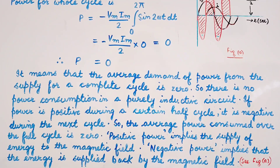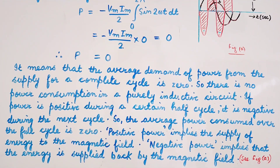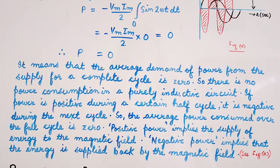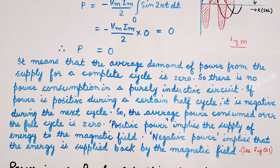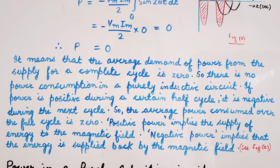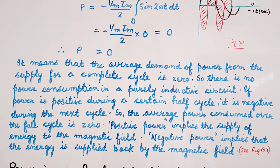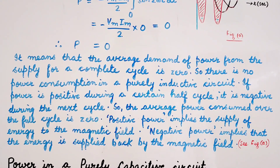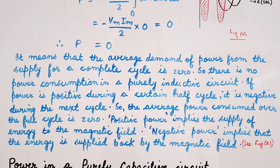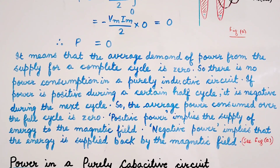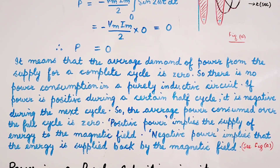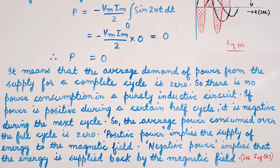If power is positive during a certain half cycle, it is negative during the next half cycle, as a result of which the average power consumed over the full cycle is 0. Positive power implies the supply of energy to the magnetic field, and negative power implies that the energy is supplied back by the magnetic field. This will be clear from the graphical representation of power shown in figure A.